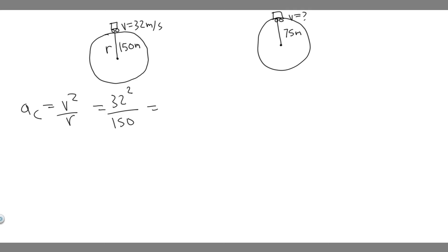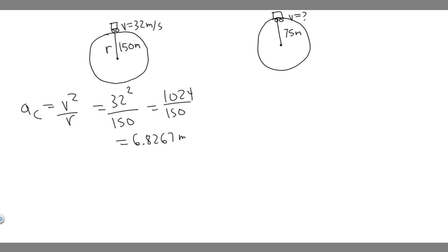Plugging this in: 32 squared is 1024 divided by 150, and when you do this you'll get 6.8267 meters per second squared, because it's centripetal acceleration.